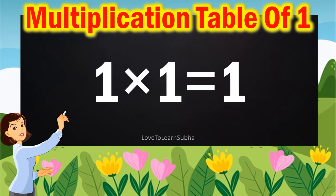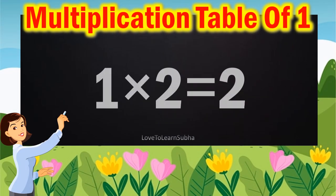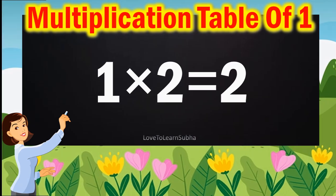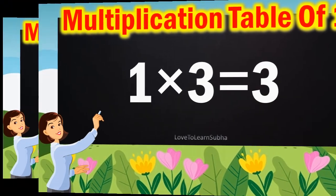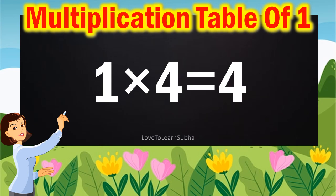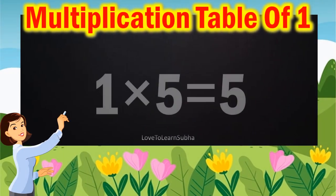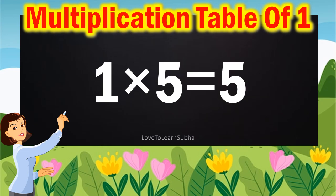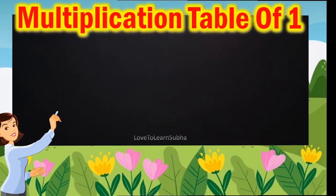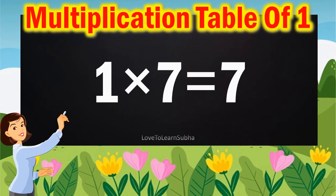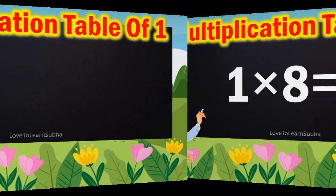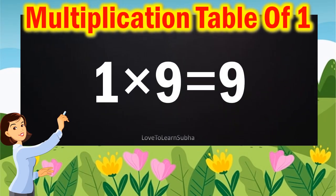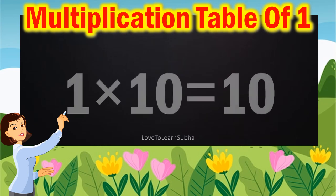1-1s are 1, 1-2s are 2, 1-3s are 3, 1-4s are 4, 1-5s are 5, 1-6s are 6, 1-7s are 7, 1-8s are 8, 1-9s are 9, 1-10s are 10.